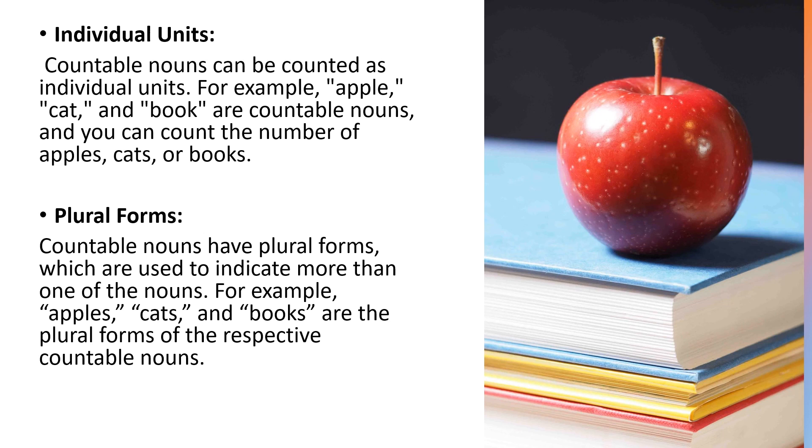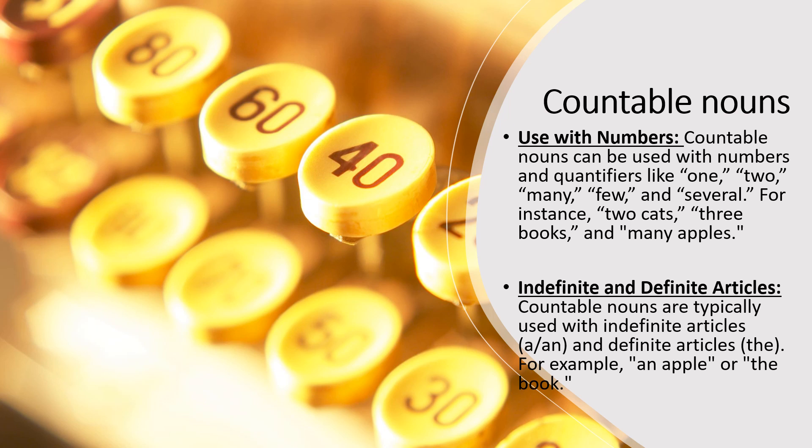Countable nouns have plural forms which are used to indicate more than one of the nouns. For example, apples, cats, and books are the plural forms of respective countable nouns. Countable nouns can be used with numbers and quantifiers like one, two, many, few, several. For instance, two cats, three books, and many apples.